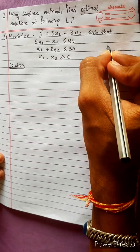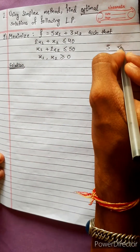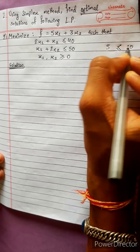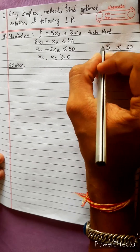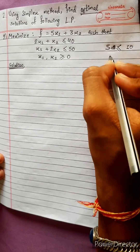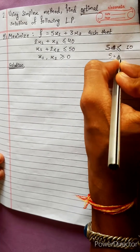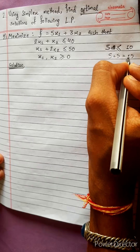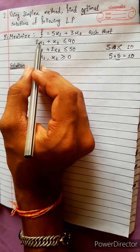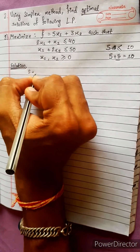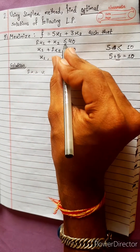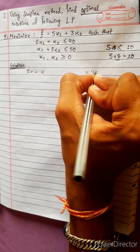For example, we have constraints: x1 plus x2 is less than or equal to 10, and 2x1 plus x2 is equal to 14. Suppose this constraint equals 40, meaning we will work with these boundary values.